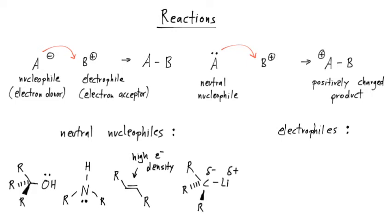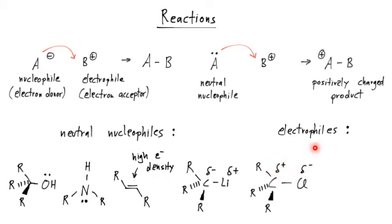Electrophiles also come in different types. For instance, you can have a partial positive charge on the carbon due to the more electronegative chloride. The chloride can often split off with the electron from the carbon to form a chloride ion, leaving a carbocation that then becomes the electrophile. Also, a ketone where you have a more electronegative oxygen withdrawing electron density from the carbon causes the carbon to become a new electrophile.